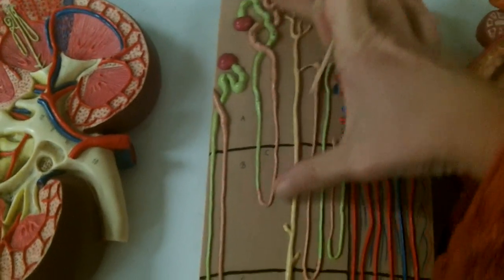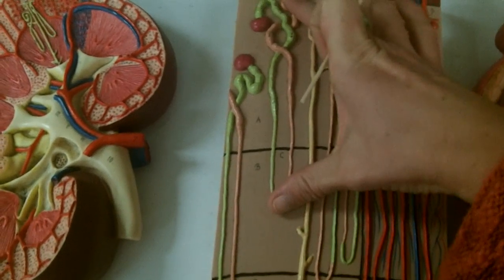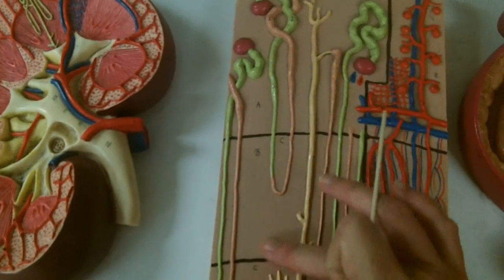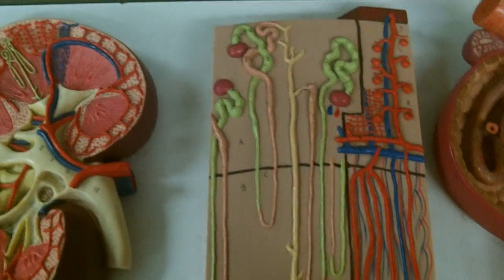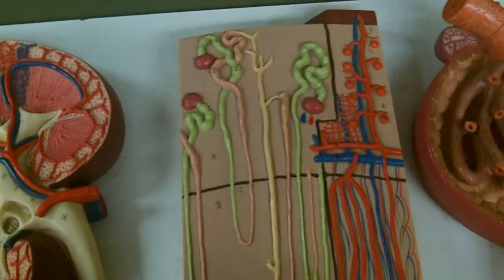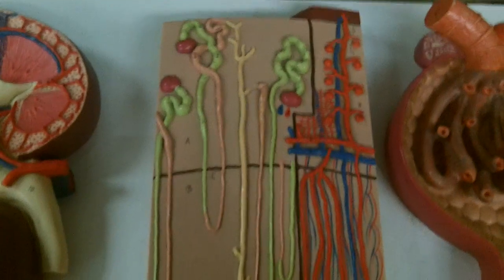Over here you can see that there is a nephron that is not extending very deeply into the inner regions of the medulla, so this is a cortical nephron and most of our nephrons are of that type.